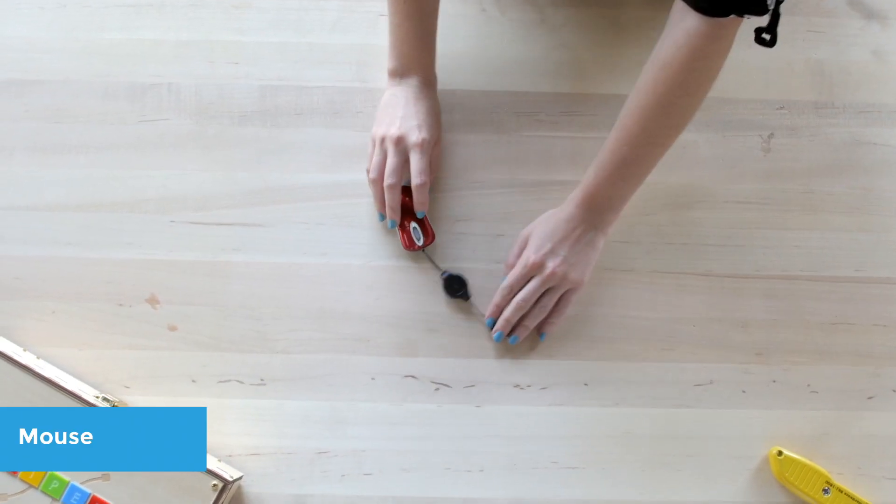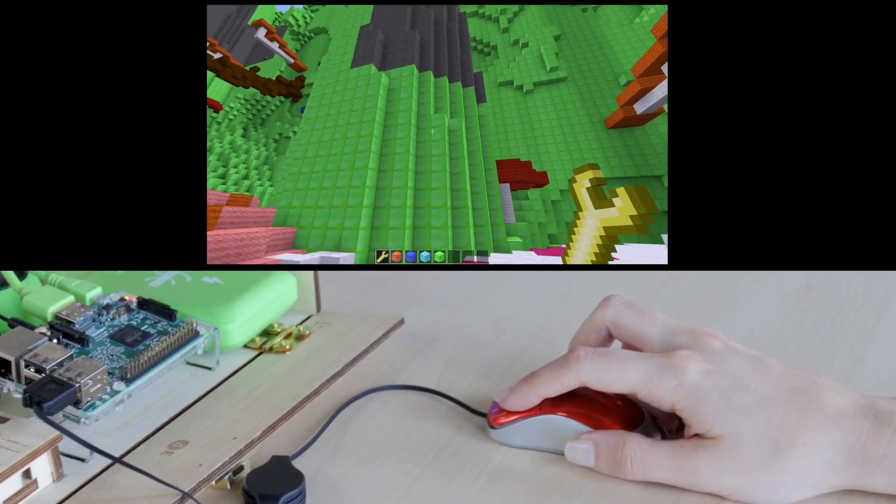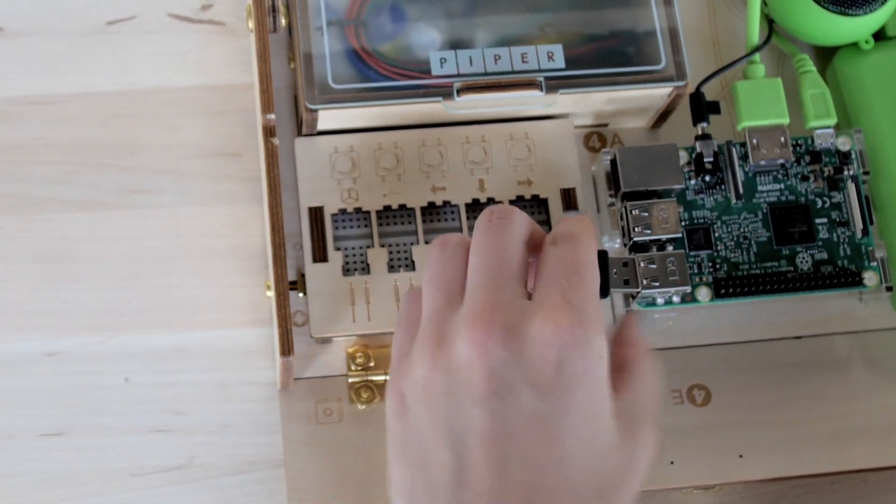Next, we will explore some inputs and outputs you can easily utilize with the Raspberry Pi. First, the mouse. Your students will need this to get started on Story Mode and to navigate through the software. The mouse is connected to the Pi via USB port.